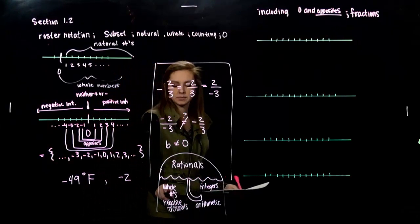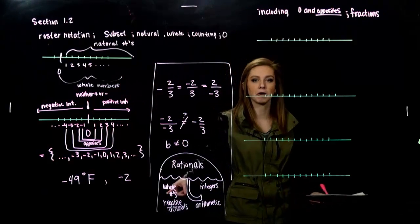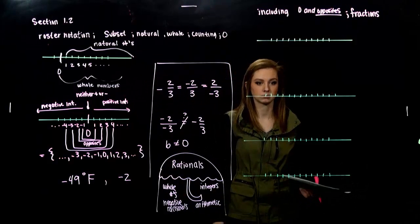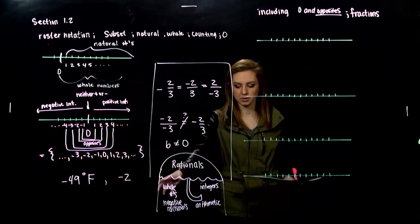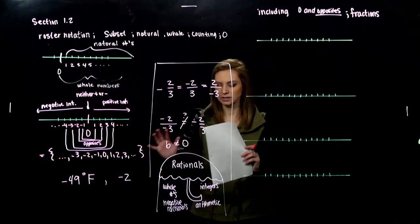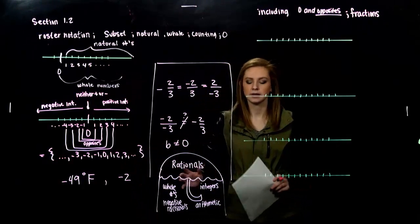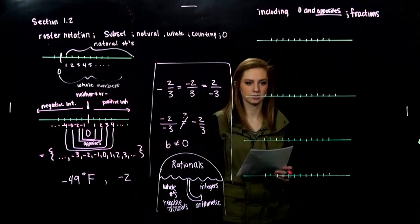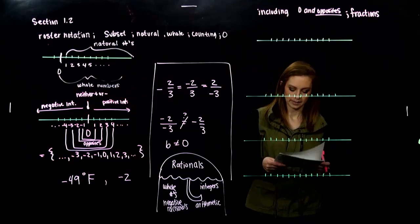And, inside of the whole numbers are the naturals. Because the whole numbers, we just added zero. And, the whole numbers are inside of the integers. So, it gets a little bit confusing. But, it's just a general picture. We have rationals. And, these kinds of numbers fall under that category.